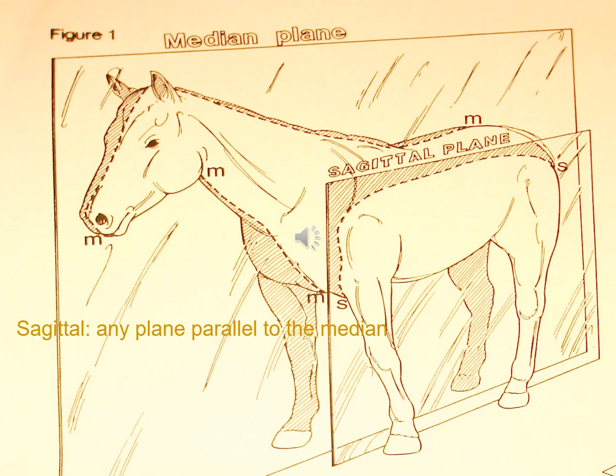Sometimes there's confusion on the term medial and median. Median means a cut from dorsal to palmar or plantar, or from cranial to caudal, that splits the tissue on the longest axis from front to back, whereas medial is the face of the limb closest to the other limb of the pair.